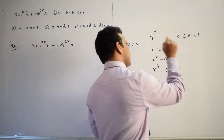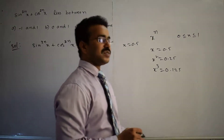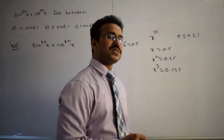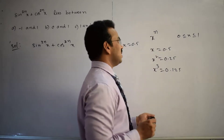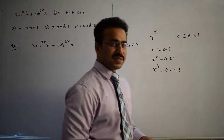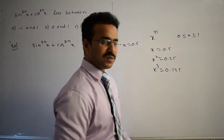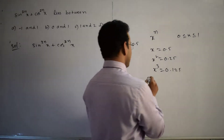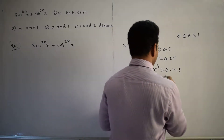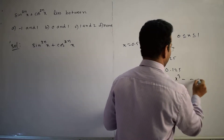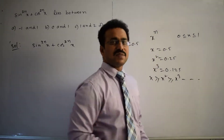As n tends to infinity, x^n tends to 0. This is only when x lies between 0 and 1; if x ≥ 1, x^n tends to infinity. From this we can conclude that x ≥ x² ≥ x³ and so on when 0 ≤ x ≤ 1.